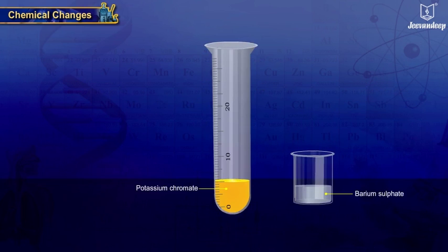Let us do one experiment and find out if it is a chemical change. Take 5 ml solution of potassium chromate and add few drops of barium sulfate solution.